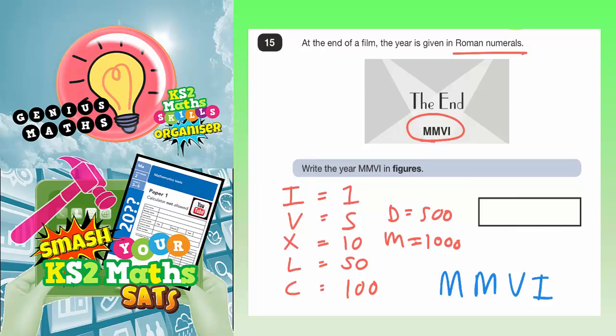Because this M here is worth 1,000. So we've got 1,000 plus another 1,000 plus V. And V is worth 5 plus an I, which is worth 1. What we've got is 1,000 plus 1,000 plus 5 plus 1. And all you've got to do now is add them together. So 1,000 plus 1,000 is 2,000. Plus 5 is 2,005. Plus 1 is 2,006. So your final answer is 2,006.